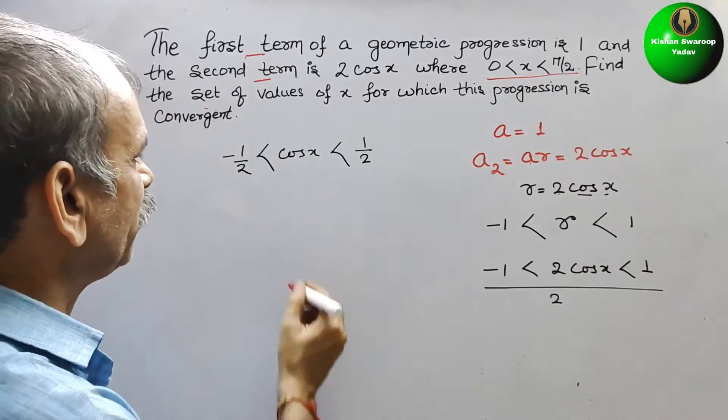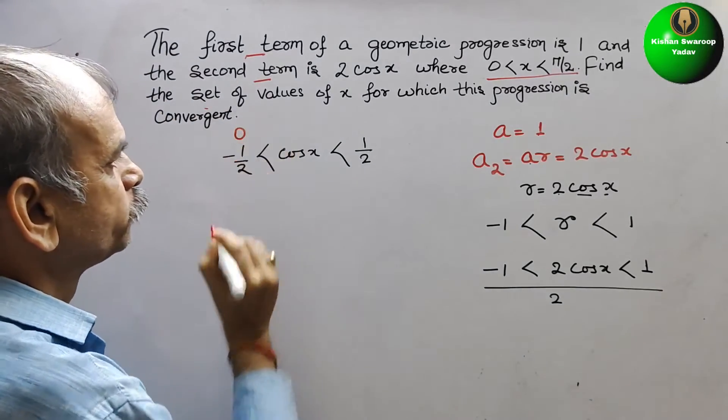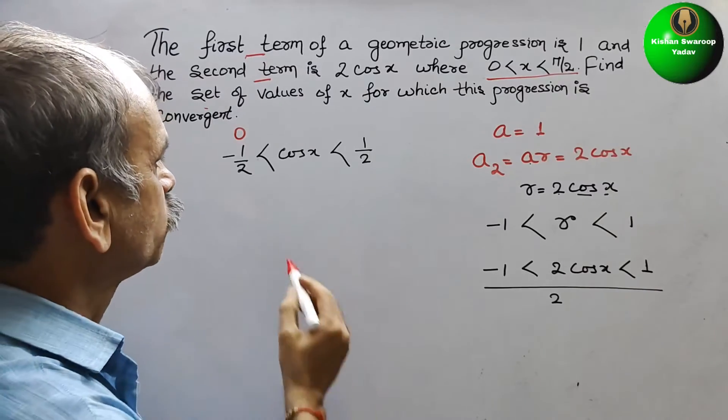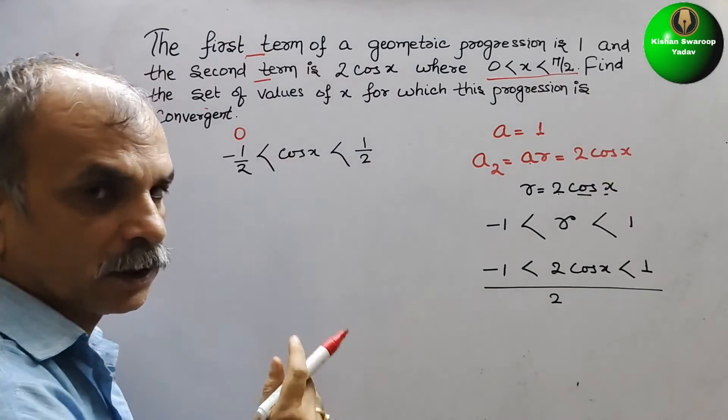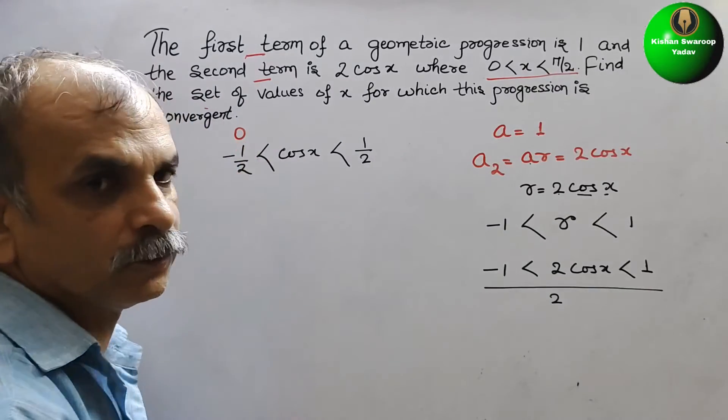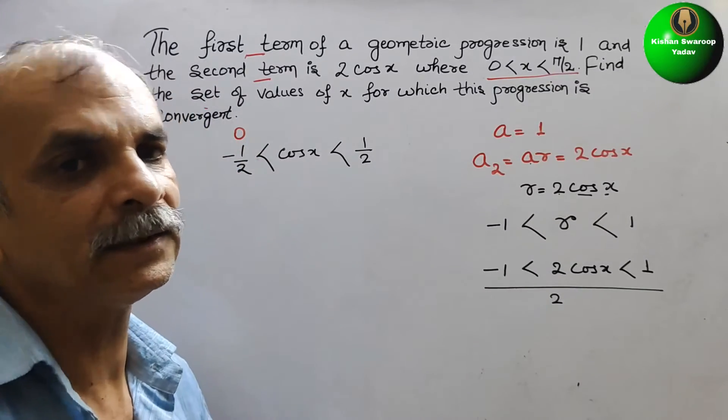But here, the value of minus 1/2 is beyond that. So, therefore, here we will take it as 0. Now, in the cos table, where we get 0? It is at π/2.